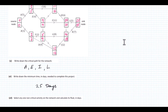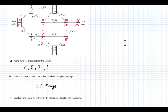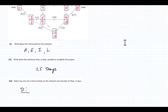Select any one non-critical activity and calculate its float. I'll take D — it's non-critical. The early time is 3, it takes 9 days, so it finishes at 12 days. The latest it can be finished is 16 days. So the float is 16 minus 9 minus 3, which equals 4 days.